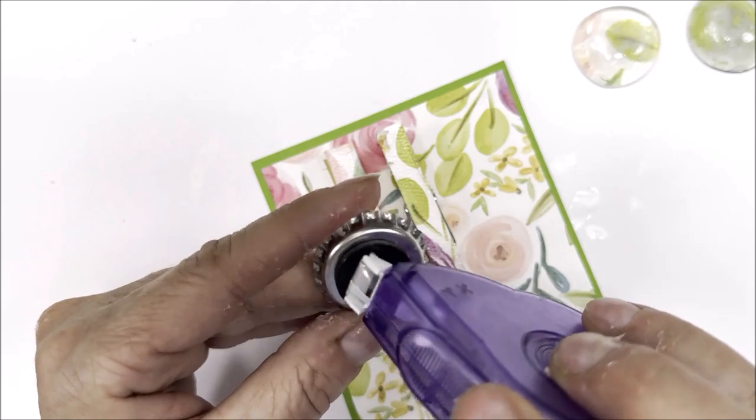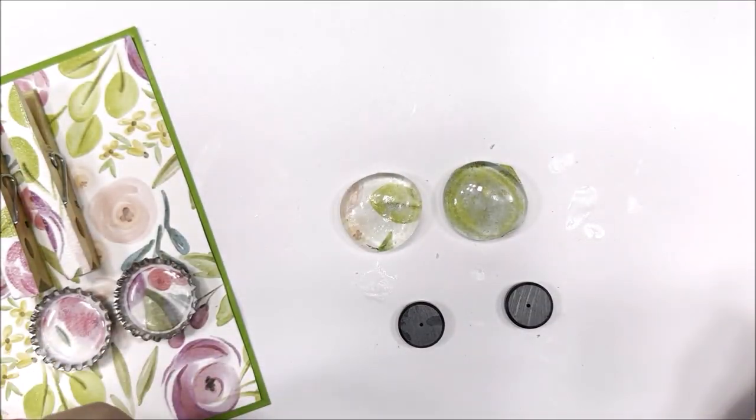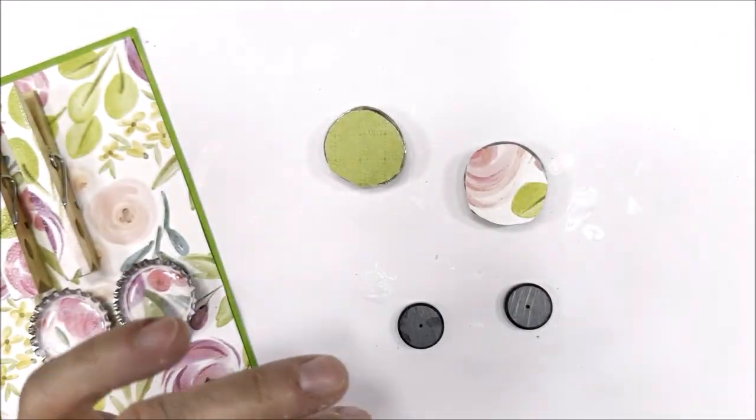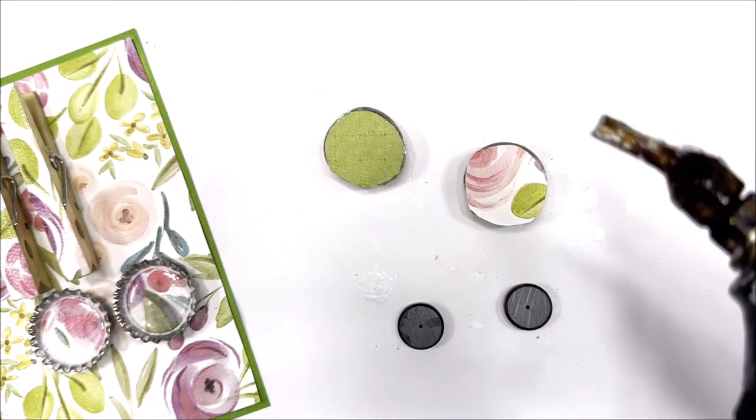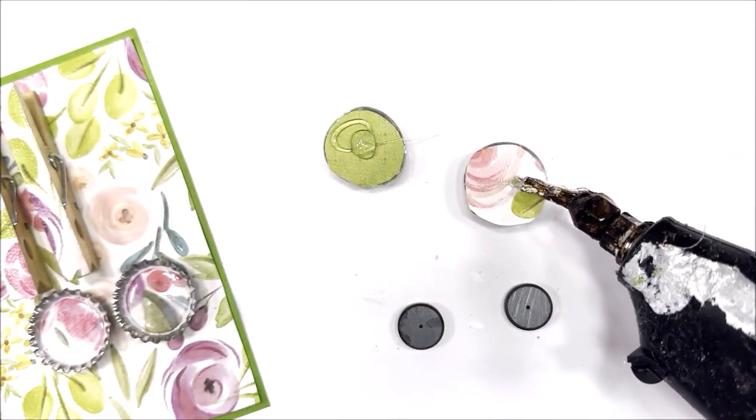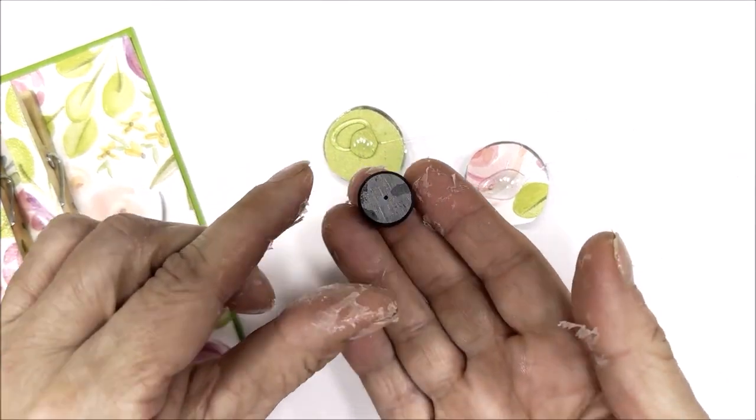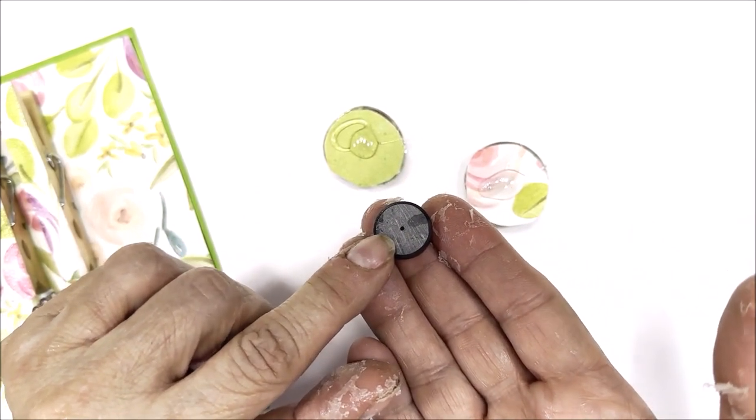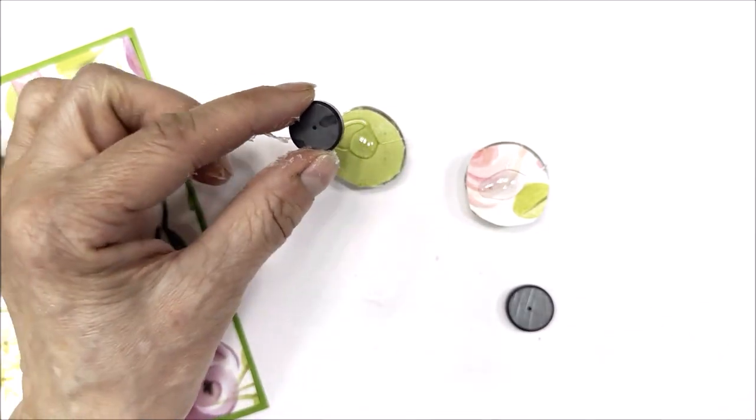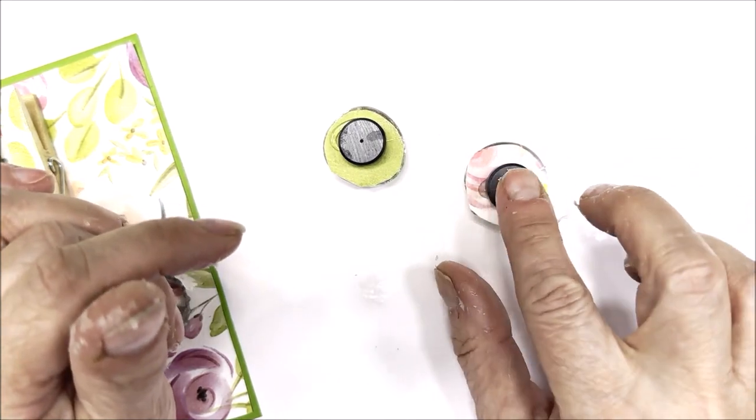Same thing with the magnets. Now that I have the scrapbooking paper underneath my magnets, I'm going to turn them upside down. And using a little hot glue, I'm going to apply my magnets. These magnets have a little dot or a little dimple in the middle. That's actually the side you want facing up. And same thing for this little guy.